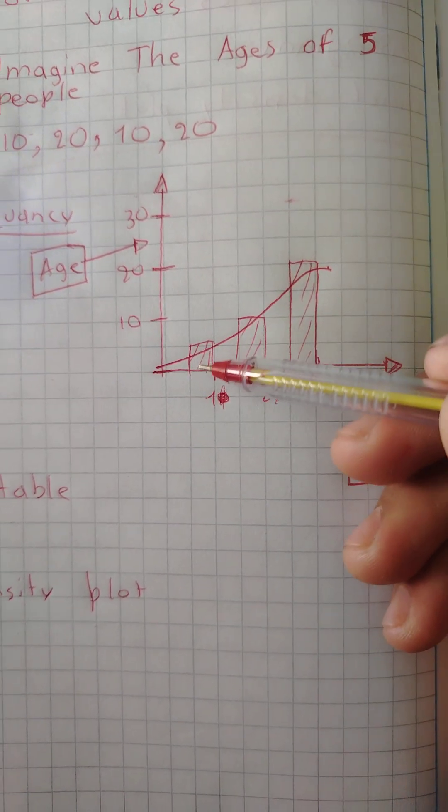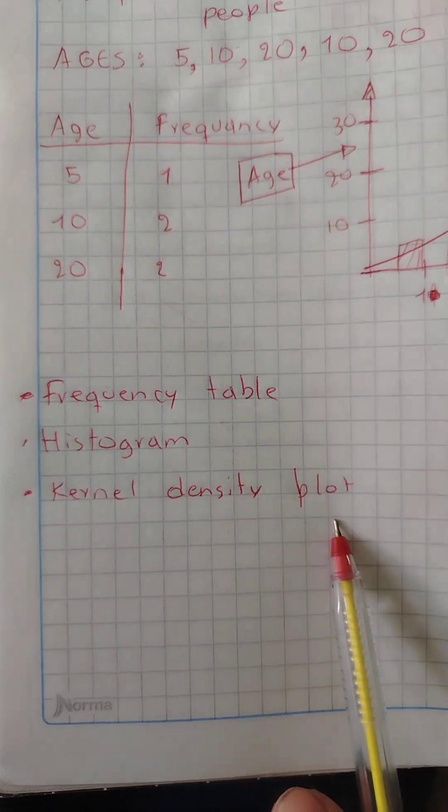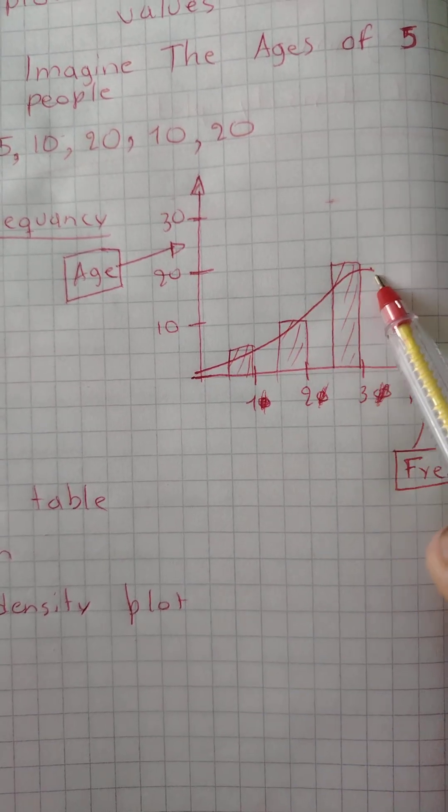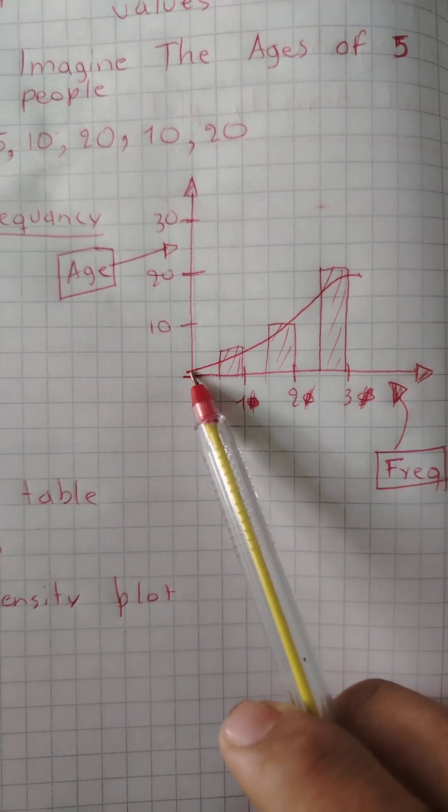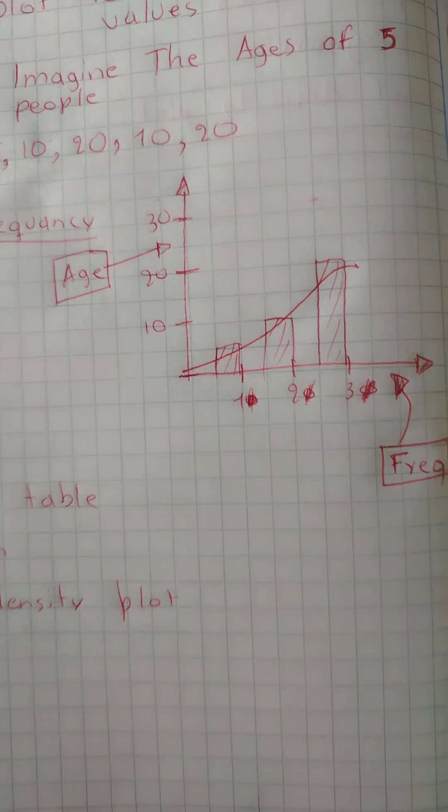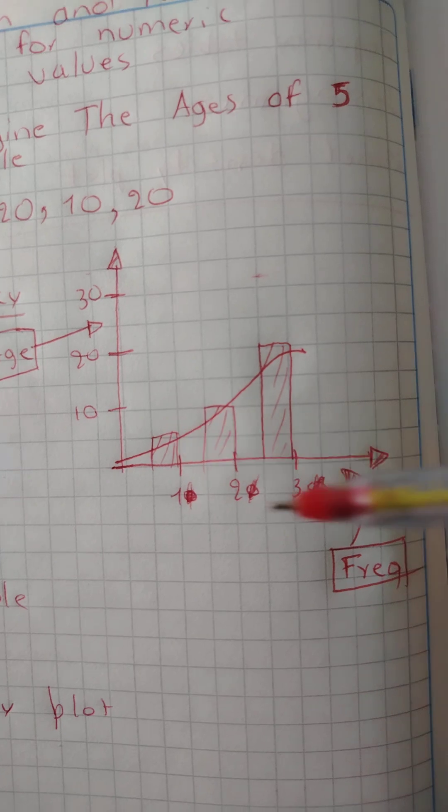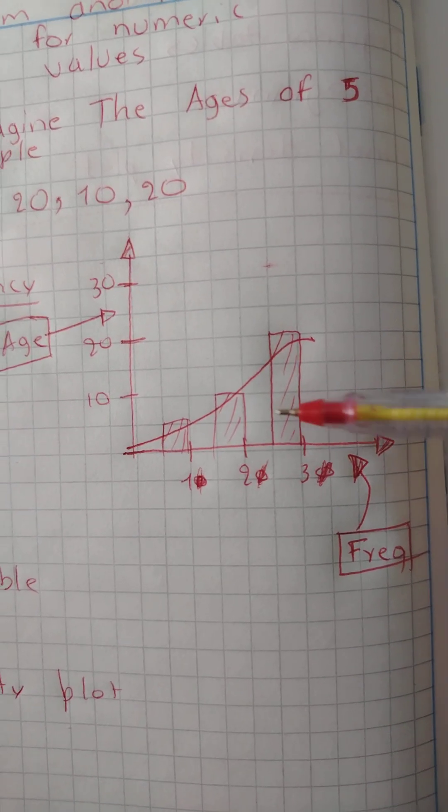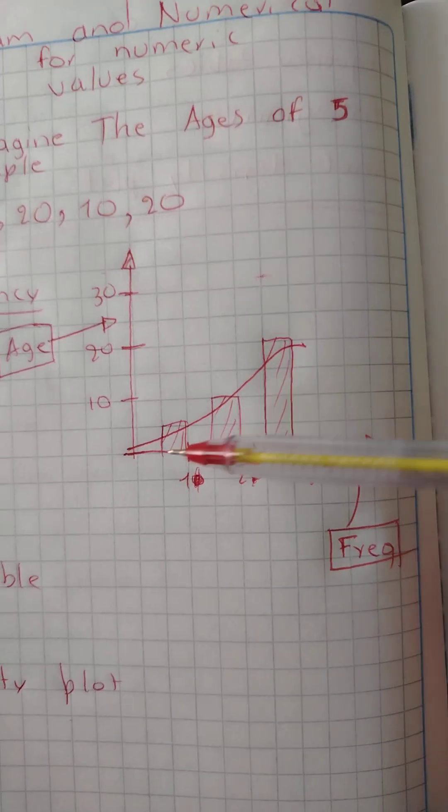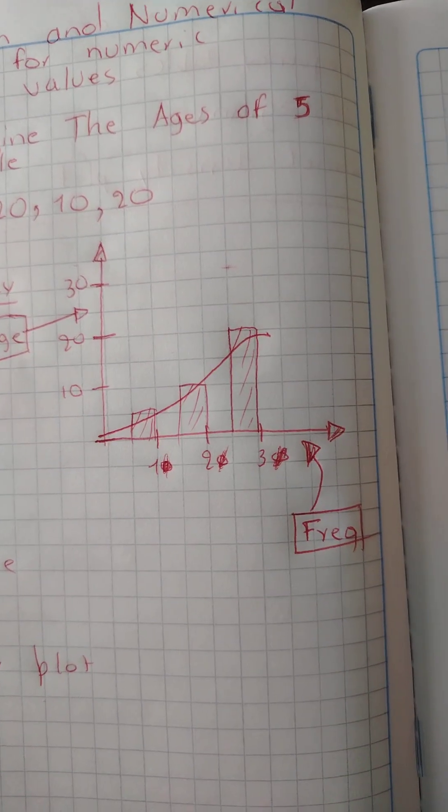The last topic is Kernel Density Plot. A Kernel Density Plot is a smooth curve that is drawn on the peak of every histogram. Why is it useful? When you have multiple histograms, it's difficult to identify a pattern, but with a Kernel Density Plot, we can easily identify where the data is going.